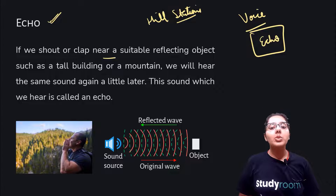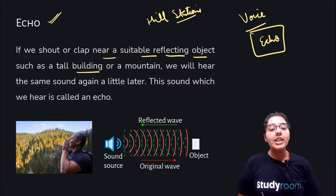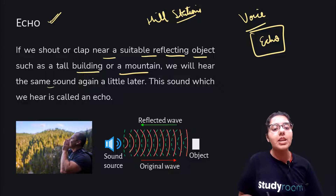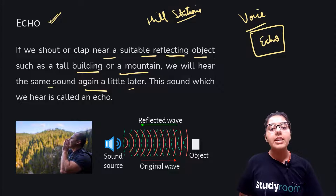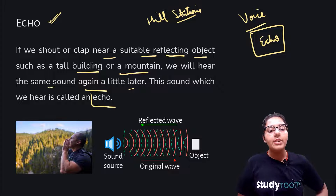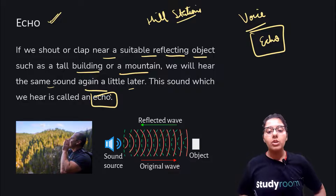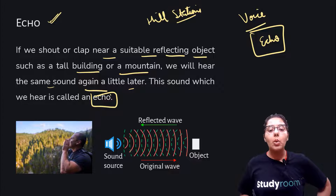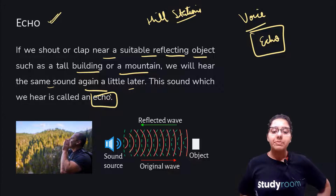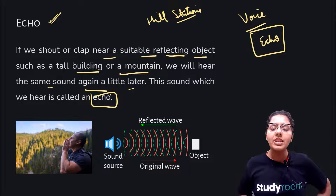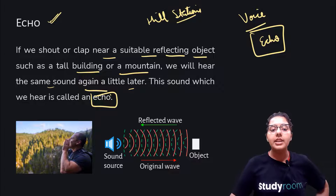If we shout or clap near a suitable reflecting object such as a tall building or a mountain, we will hear the same sound again a little later. This sound which we hear is called an echo. As you can see in this diagram, this is your sound source, your object, and your original wave. It travels and is reflected back after some time, after a little later.